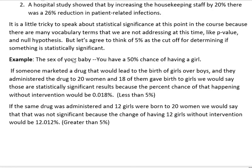Let's think about this: the sex of your baby. You should know that you have a 50% chance of having a girl and a 50% chance of having a boy. If we look at all the birth records over many years, looking at millions and millions, it comes out to be about 50-50. So let's say that someone marketed a drug that would lead to the birth of girls over boys, and they administered the drug to 20 women, and 18 of them gave birth to girls.